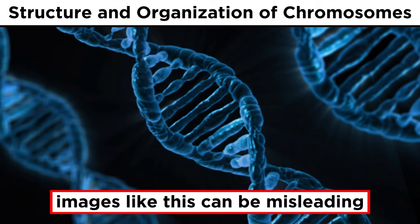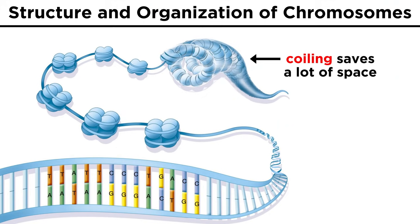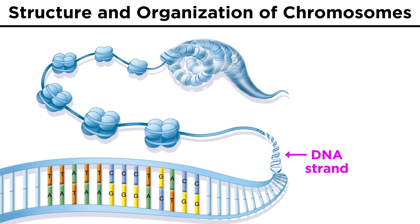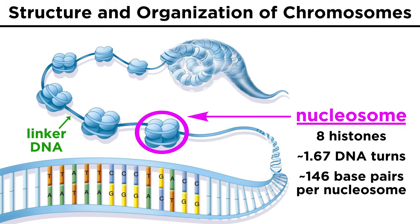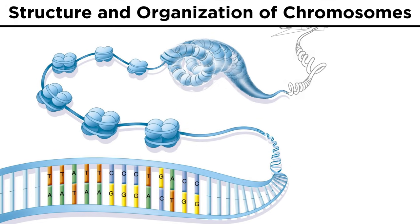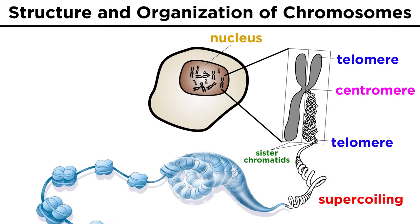First, we must understand that while we often see pictures of DNA looking like this, DNA is not just floating around the nucleus in this form. DNA is typically coiled up to save space, because there is so much of it to store. DNA strands are wrapped around proteins called histones, and these DNA-histone complexes are called nucleosomes. Then this undergoes further supercoiling until we get chromosomes of the familiar shape.